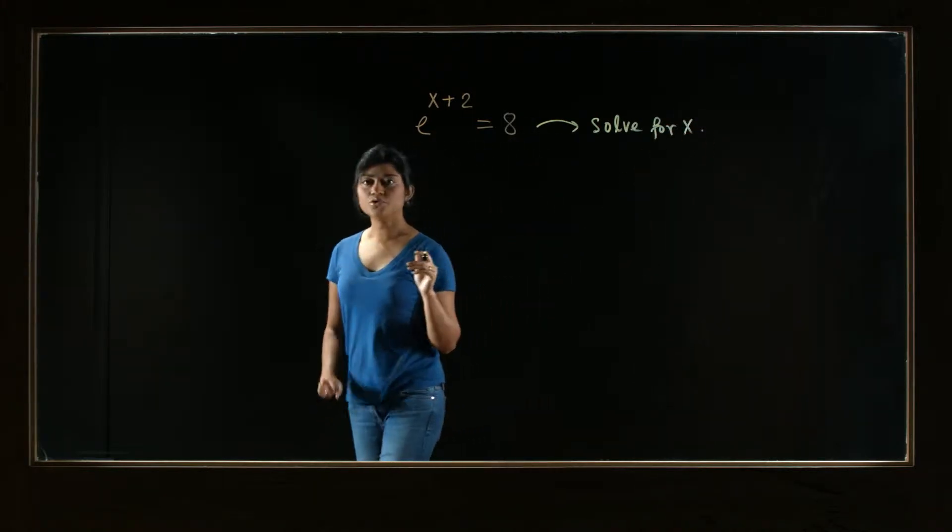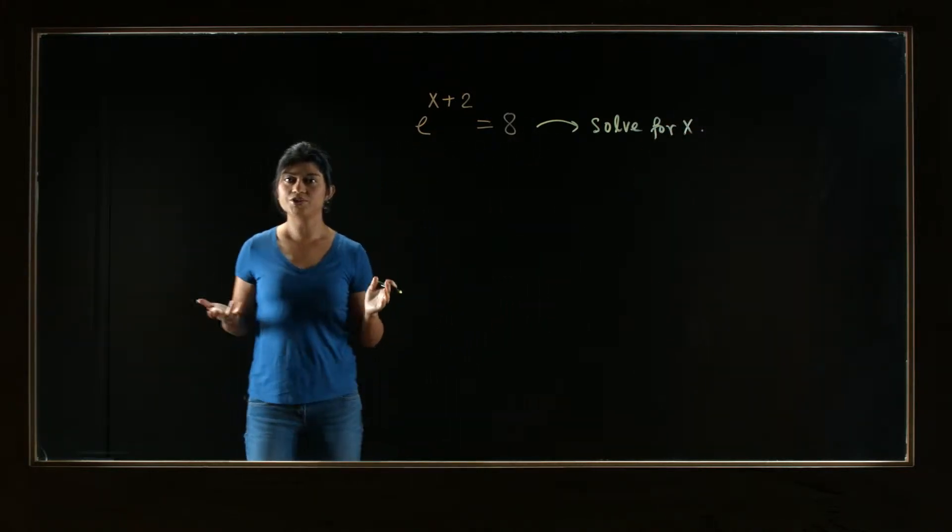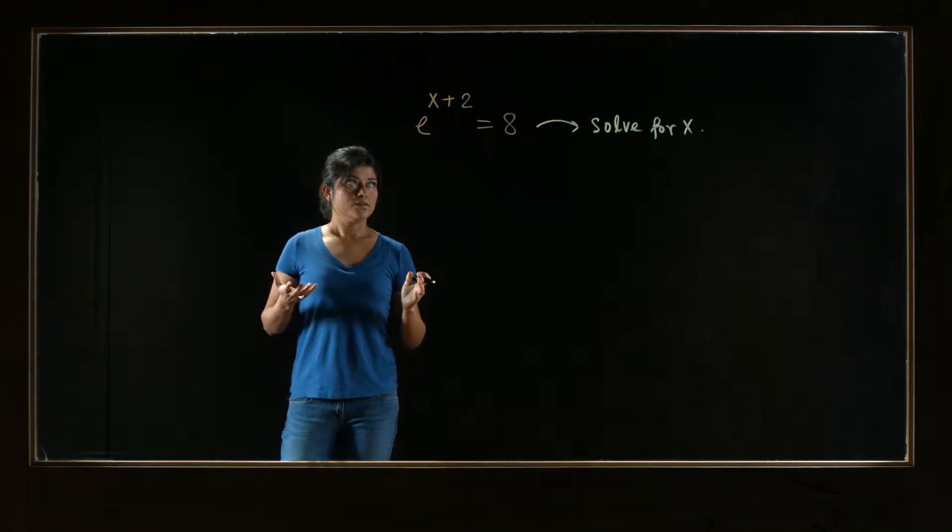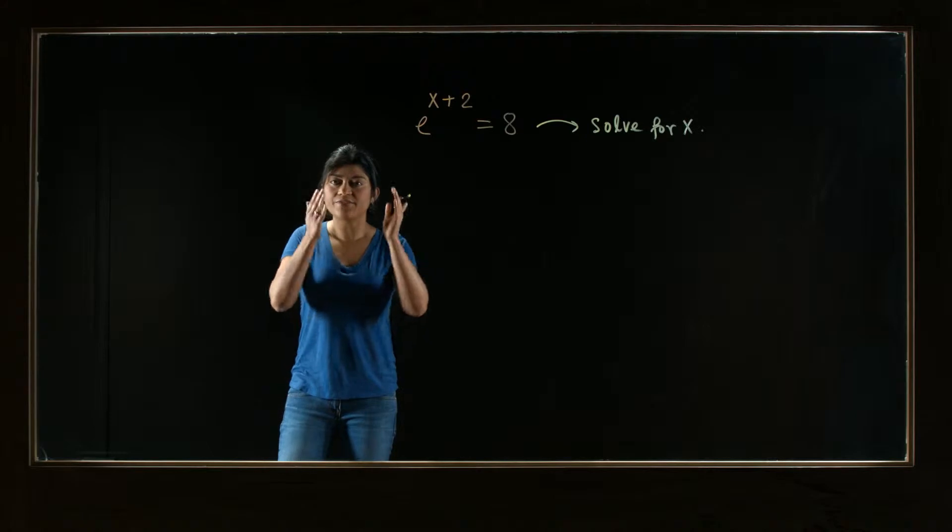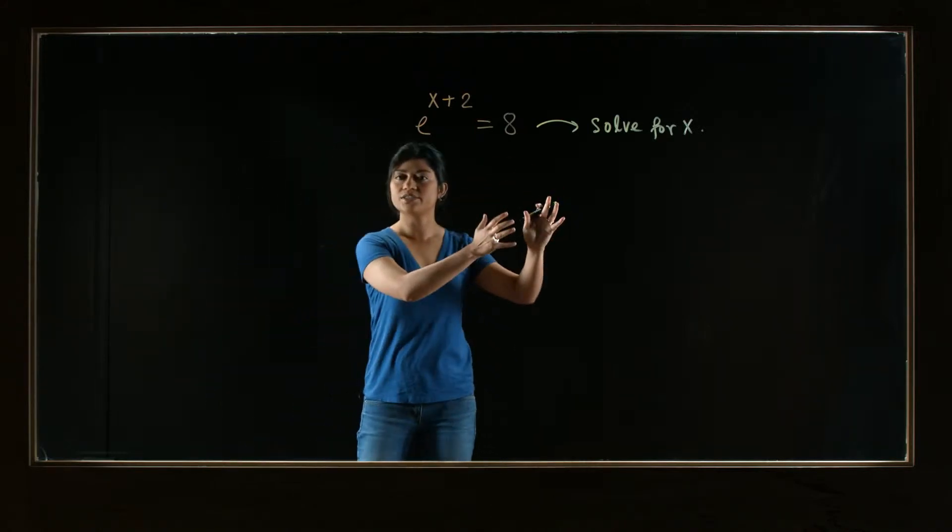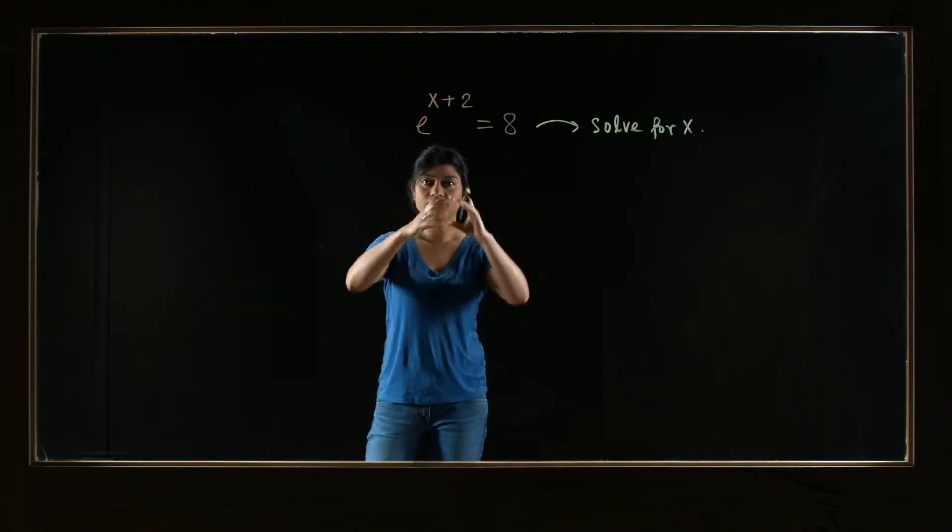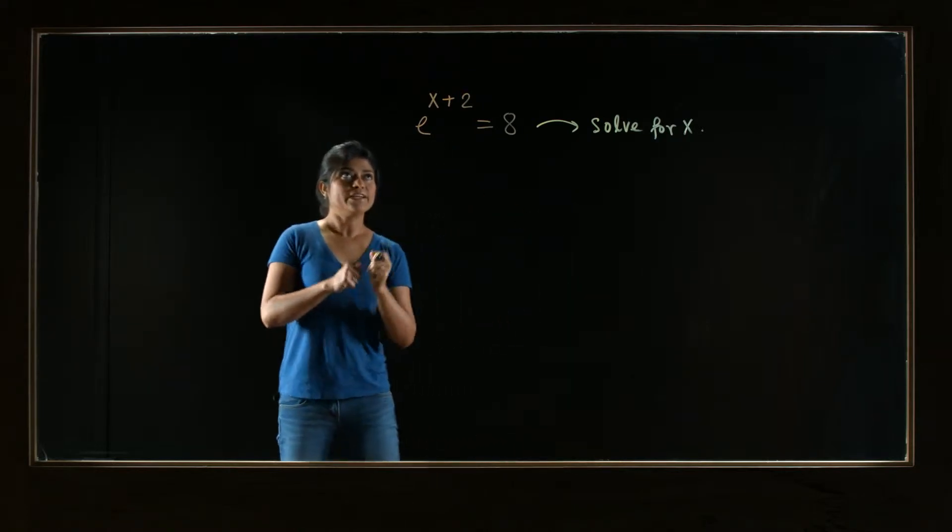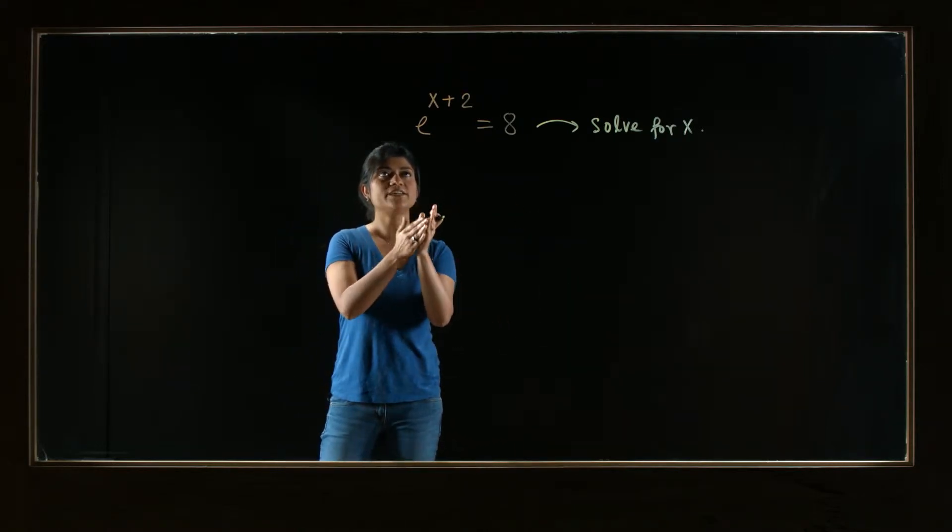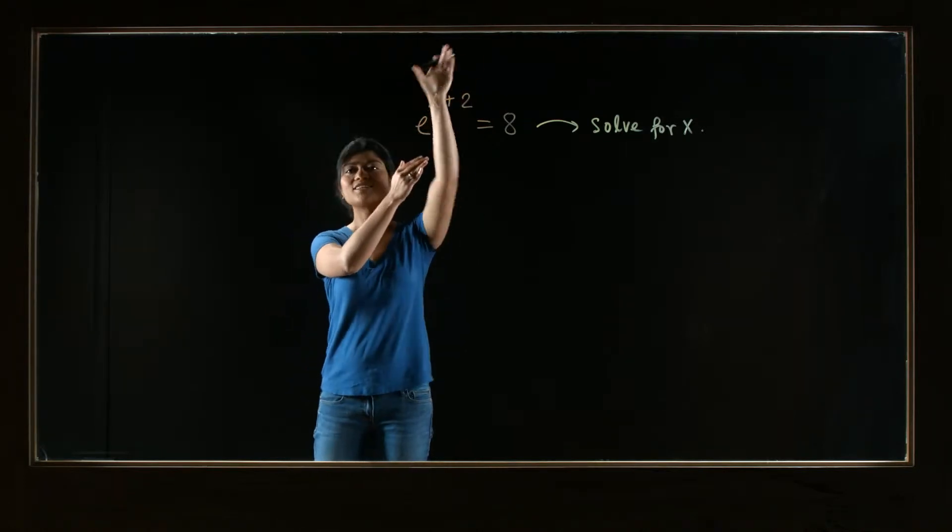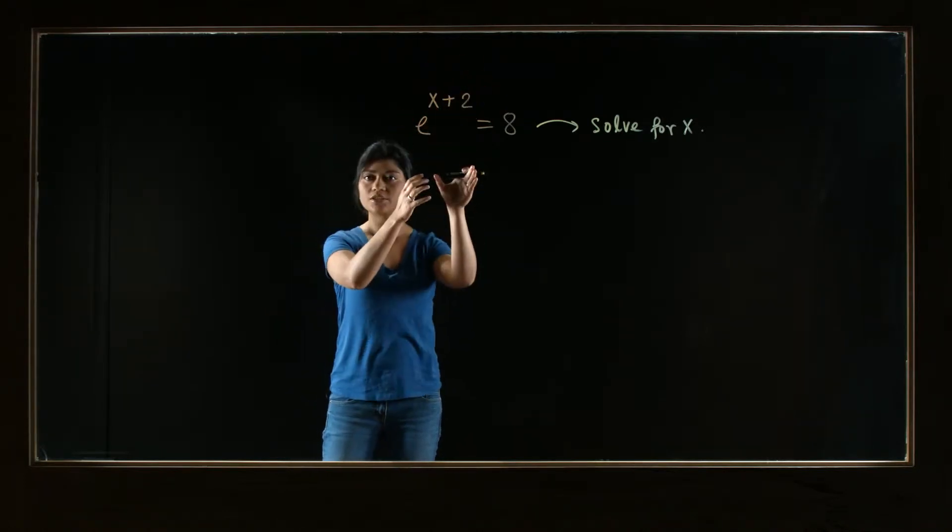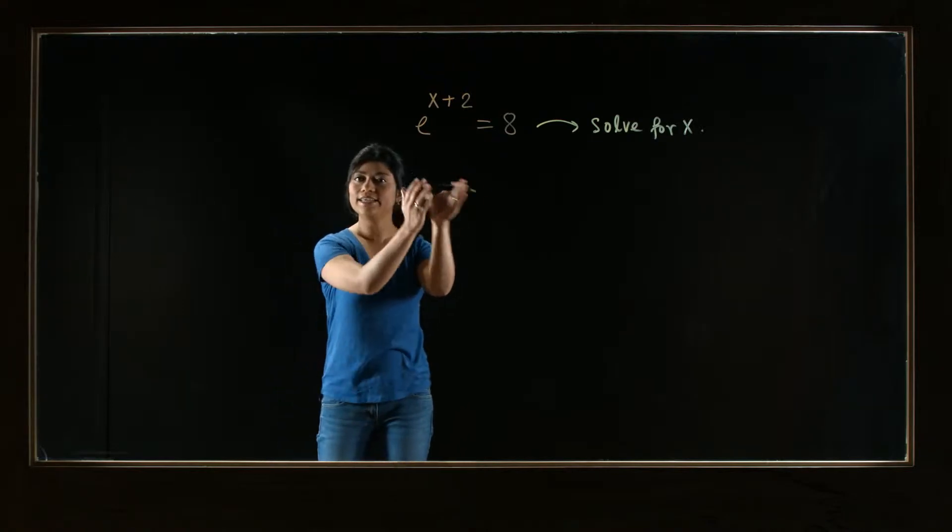Now, how do we solve for x given an equation? Well, we want the x, that variable, to be on one side and everything else on the other side. Usually, that's how we solve in an equation. But here, the difficulty is the x, the variable, is in the exponent. It's not sitting as a linear form.